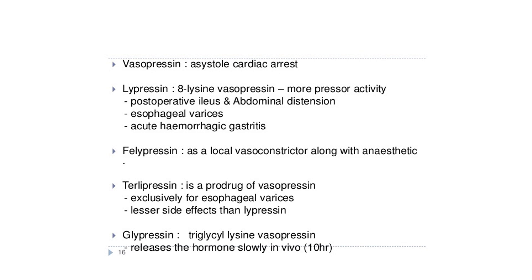Other agonists include lypressin, felypressin, terlipressin, and glypressin. Lypressin is 8-lysine vasopressin; though somewhat less potent than vasopressin, it acts on both V1 and V2 receptors with a longer duration of action of 4 to 6 hours and is used for V1 receptor-mediated actions at a dose of 20 international units per mL. Terlipressin is a synthetic prodrug of vasopressin used specifically for bleeding esophageal varices, producing fewer adverse effects than lypressin, with a dose of 2 mg IV. Glypressin is a triglycyl-lysine vasopressin that releases the hormone very slowly over about 10 hours.